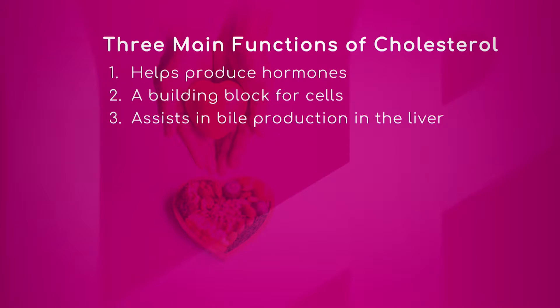From an evolutionary standpoint, our bodies produce what they should and what they need. Cholesterol is essential — it's a building block for hormones and cell membrane structures, which is why the body makes it. It wouldn't leave it up to chance that you must eat a certain food or die, because it's so important. So we manufacture cholesterol.